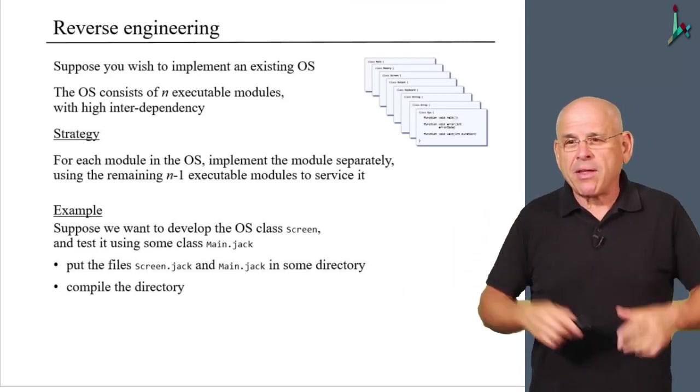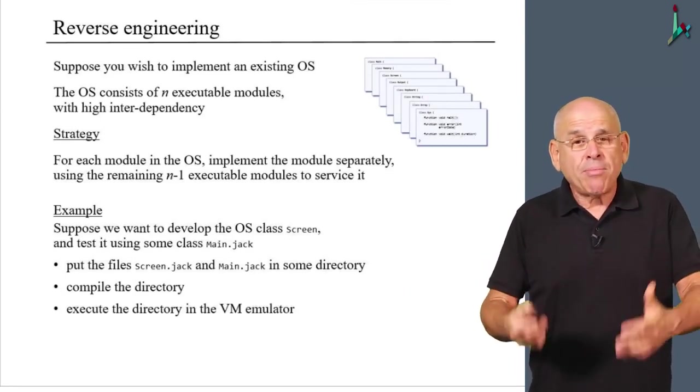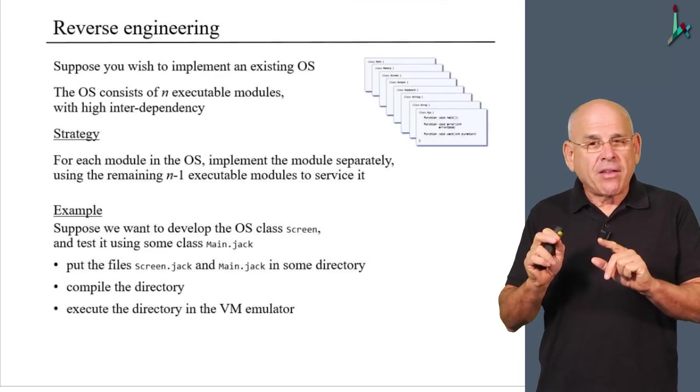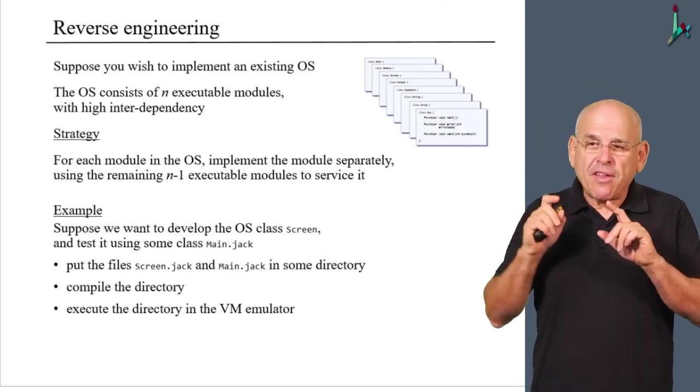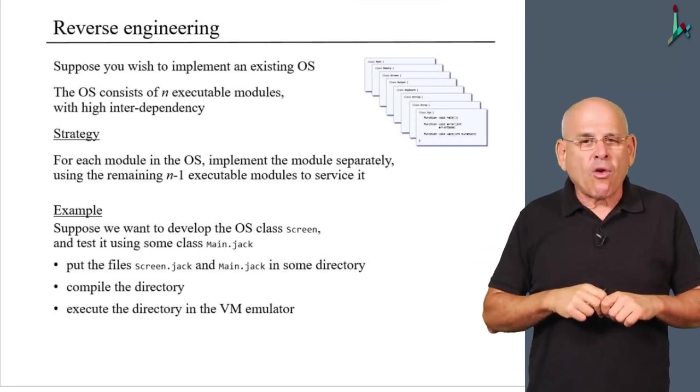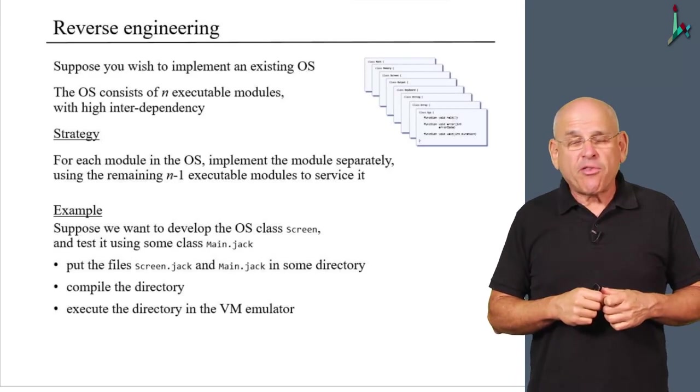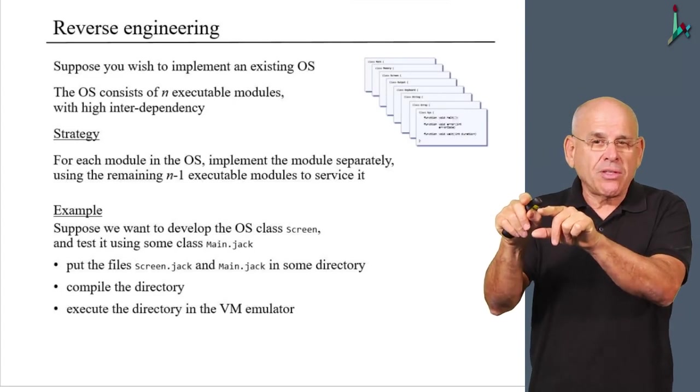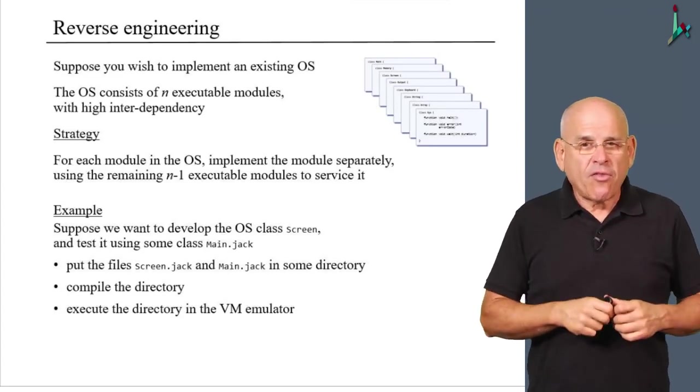Now what you get is a set of VM classes, or two VM classes, screen.vm and main.vm, that you can now go on to execute. How will you execute it? Well, you will simply execute the directory in the VM emulator. Now think about it. The VM emulator has a built-in implementation of the operating system, but if it finds a user implementation of any VM function, including let's say a draw rectangle or draw line, you know, functions that you have written in Jack and compiled and transformed into VM functions, then the VM emulator is going to use your implementation instead of the built-in implementation.